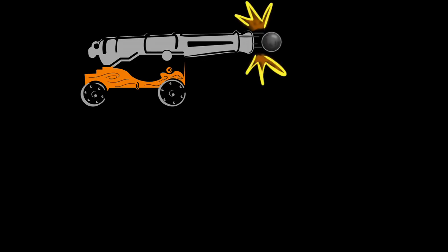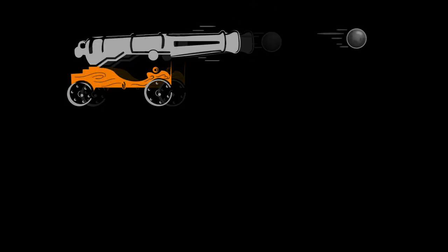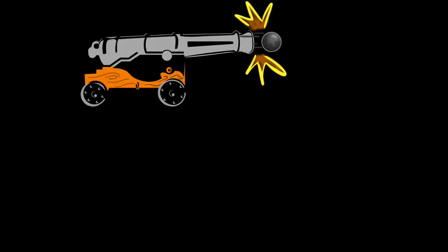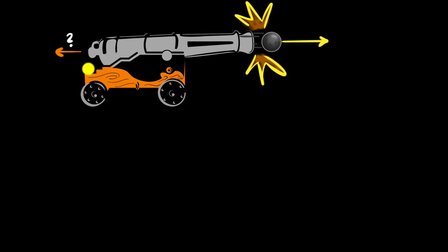When we shoot a cannon, not only does the ball go forward, but the cannon itself goes backward. This means when we shot it, the ball gained a forward momentum, and the cannon itself also gained a backward momentum. And the big question is, if we know what the forward momentum of the ball is, can we figure out what the backward momentum of the cannon is?